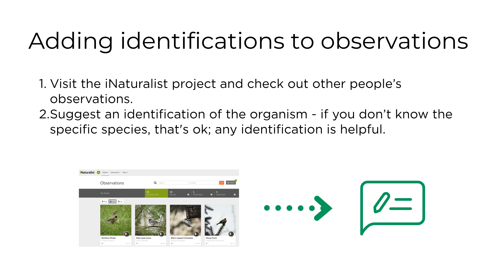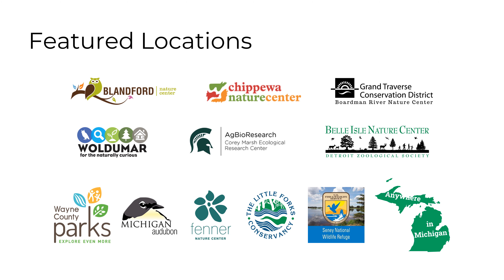Another way to participate is by adding identifications to observations. To do this, first visit the iNaturalist project and check out other people's observations. Then suggest an identification of the organism. If you don't know the specific species, that's okay — any identification is helpful.